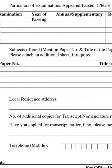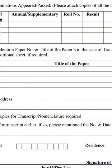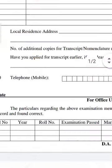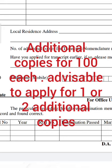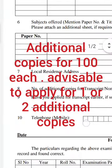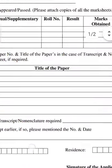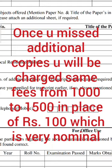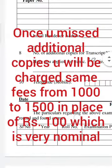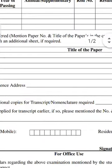For the local resident address and number of additional copies, I would advise you to definitely procure one or two more copies. Additional copies are provided for only Rs. 100 each. If your transcript is more than six years old the charge is Rs. 1500, and less than six years is Rs. 1000 per transcript. But additional copies are only Rs. 100 each, so it is always advisable to get one or two extra for future needs. If you apply later for more copies you will be charged Rs. 1500 or Rs. 1000 per copy.